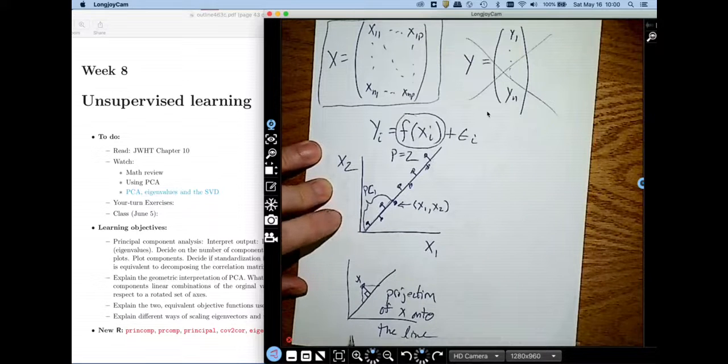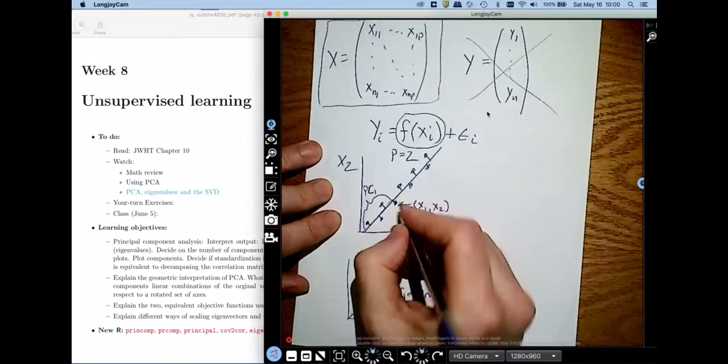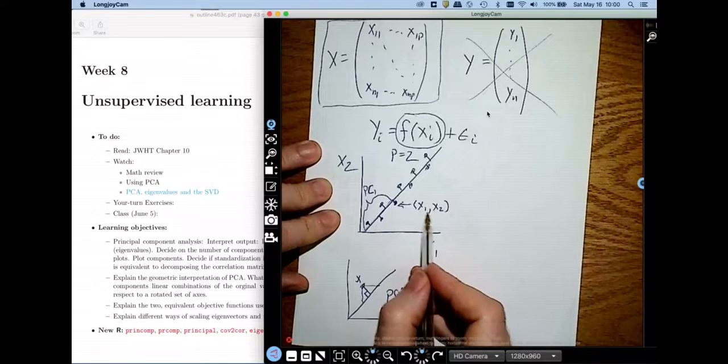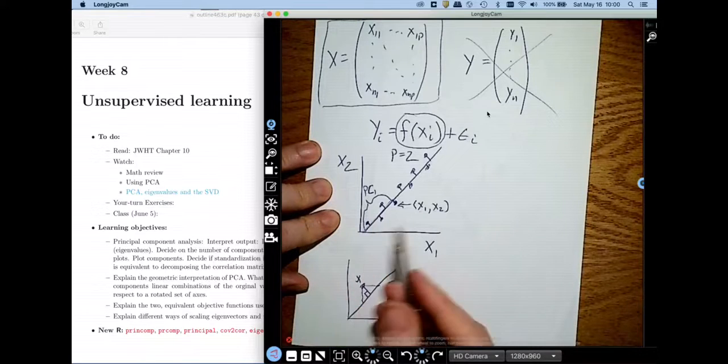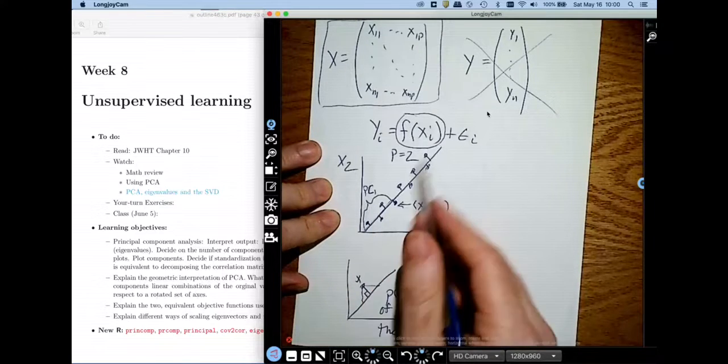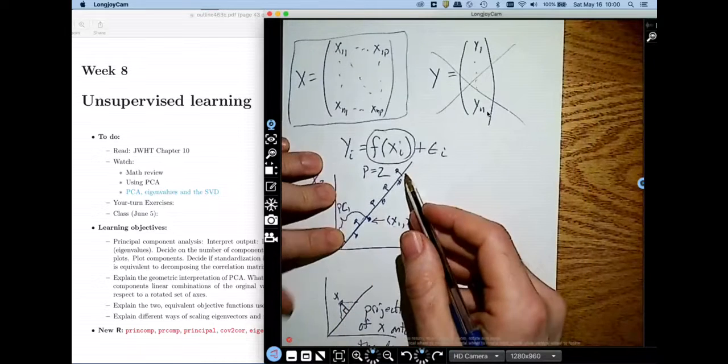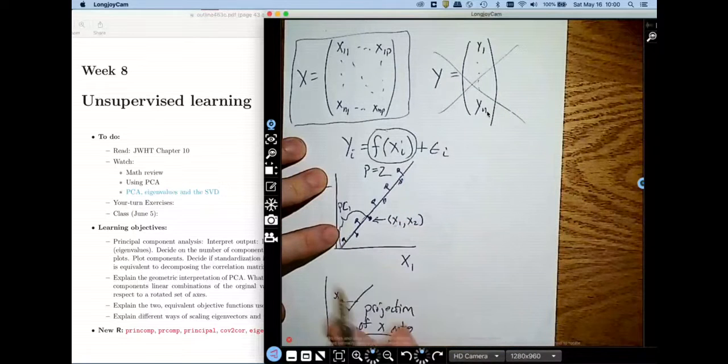Just for your information, the second principal component is going to be the distance between the line and the point. So that's why it's called dimensionality reduction. Instead of using two coordinates, I'm only going to need one to describe these points. You can think about using half the information to characterize these points by just using one dimension.